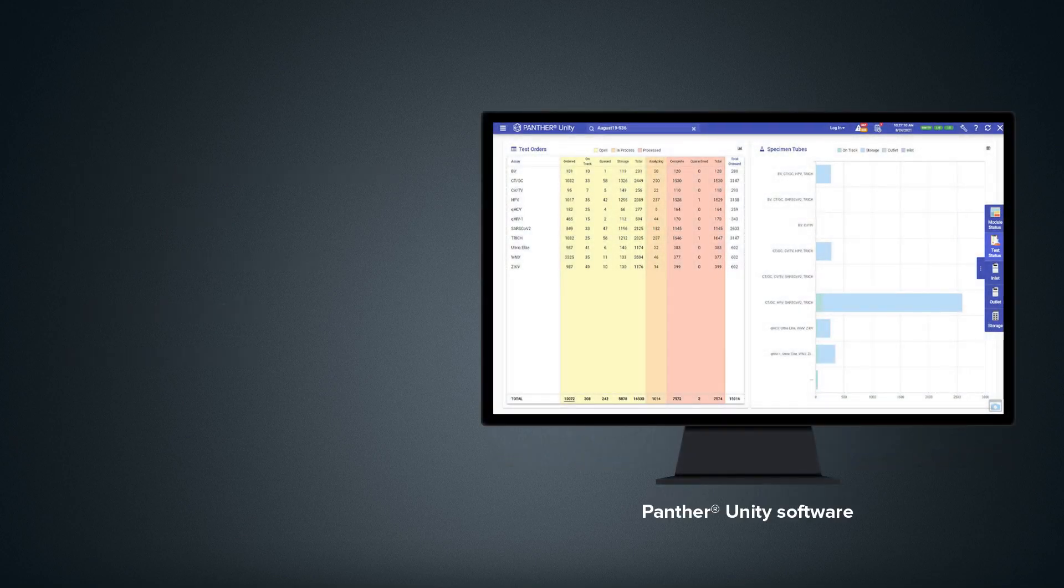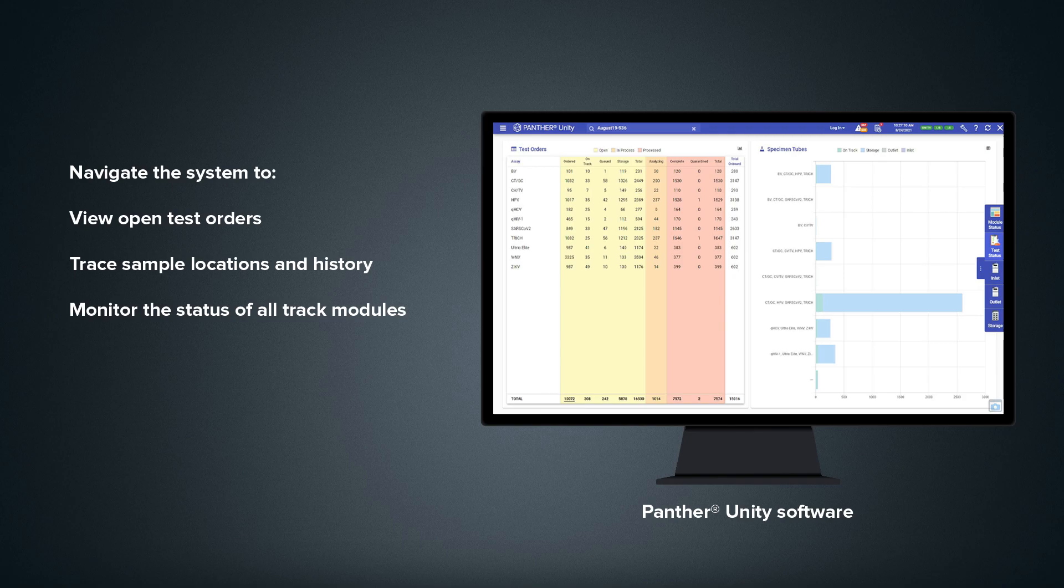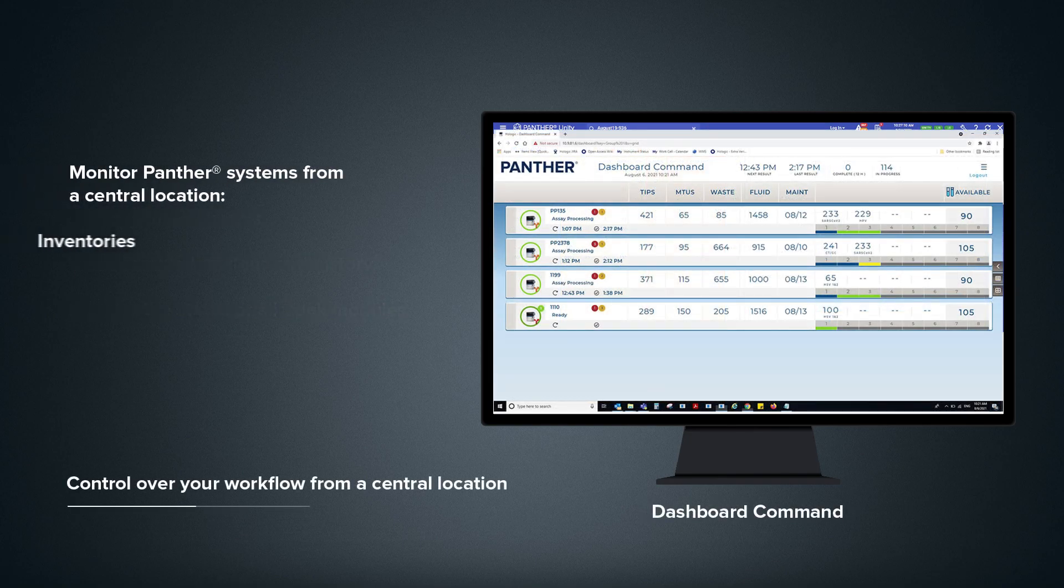Through the Panther Unity software, you're able to navigate the system and view the status of open test orders, trace sample locations and history and monitor the status of all track modules. And from dashboard command, you're also able to monitor the status of your Panther instruments, giving you control over your entire workflow from a centralized location.